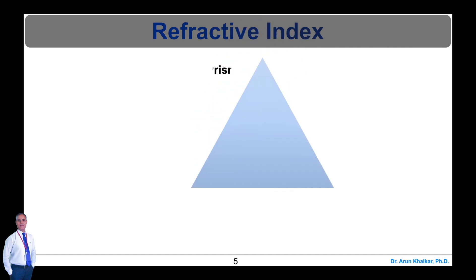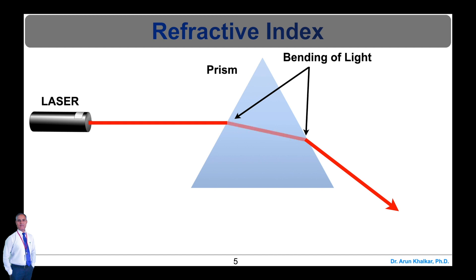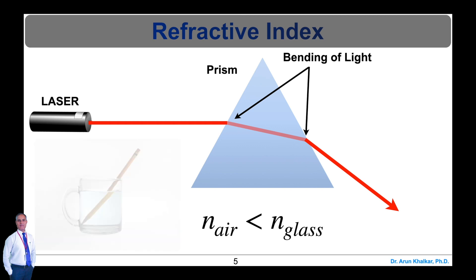To understand refraction, let's consider light passing through a prism. At the interface, light gets bent instead of going straight. This phenomenon is called refraction. Refraction occurs when light passes from one medium to another with a different refractive index. The light bends towards the interface when it goes from a medium of high to one of low refractive index. Refraction is the reason why a pencil looks bent in a glass of water.